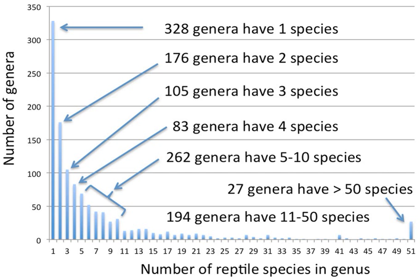An available (zoology) or validly published (botany) name that has been historically applied to a genus but is not regarded as the accepted current name for the taxon is termed a synonym. A particular genus name may have zero to many synonyms — the latter case generally if the genus has been known for a long time or if a range of genera previously considered separate taxa have subsequently been consolidated into one. For example, the World Register of Marine Species lists eight genus-level synonyms for the sperm whale genus Physeter Linnaeus, 1758, and thirteen for the bivalve genus Pecten O.F. Müller, 1776.